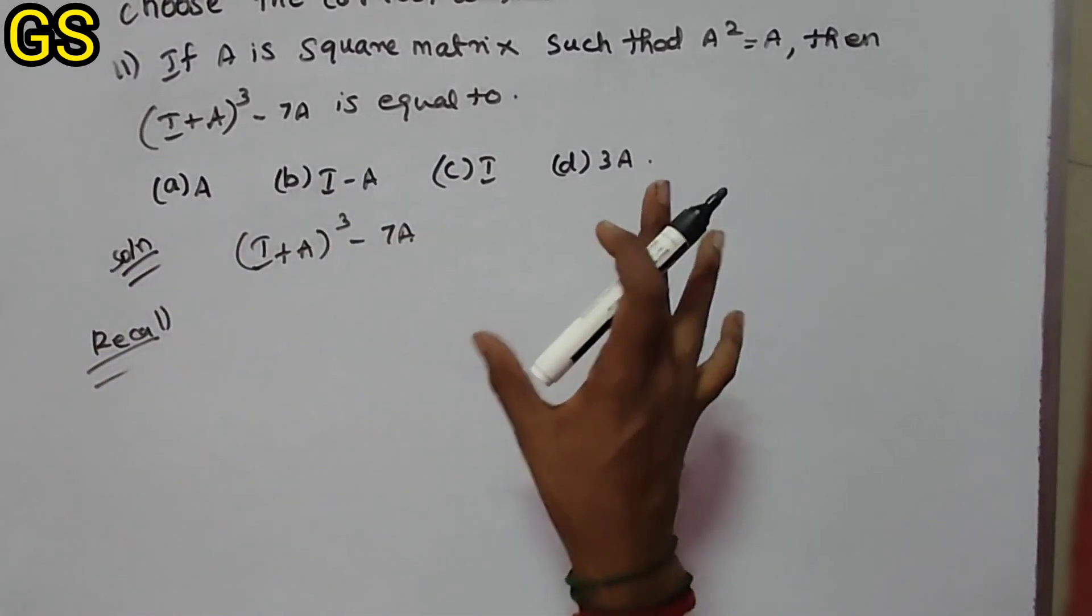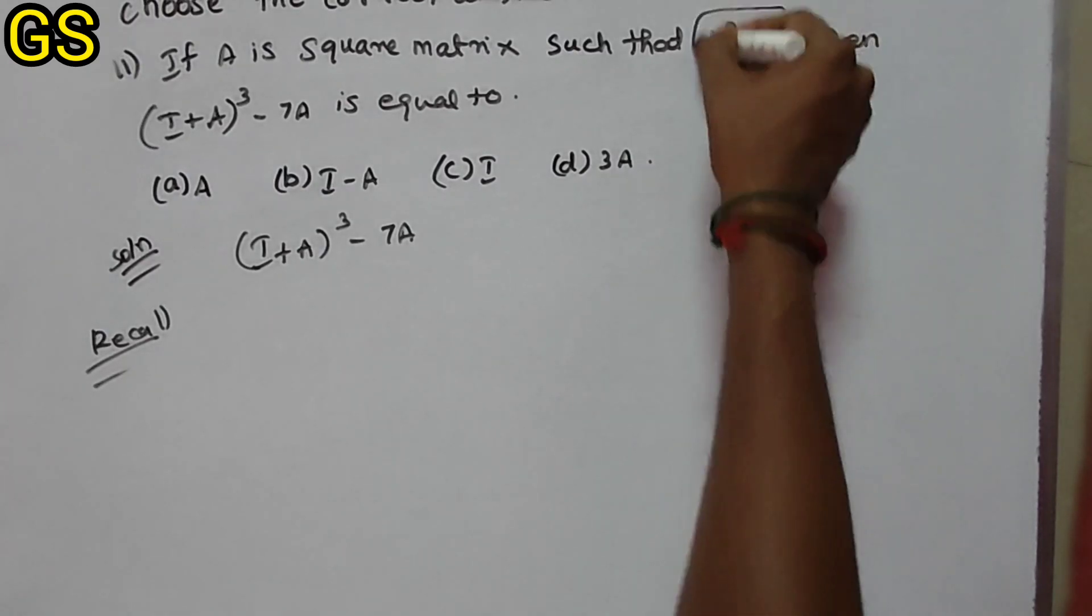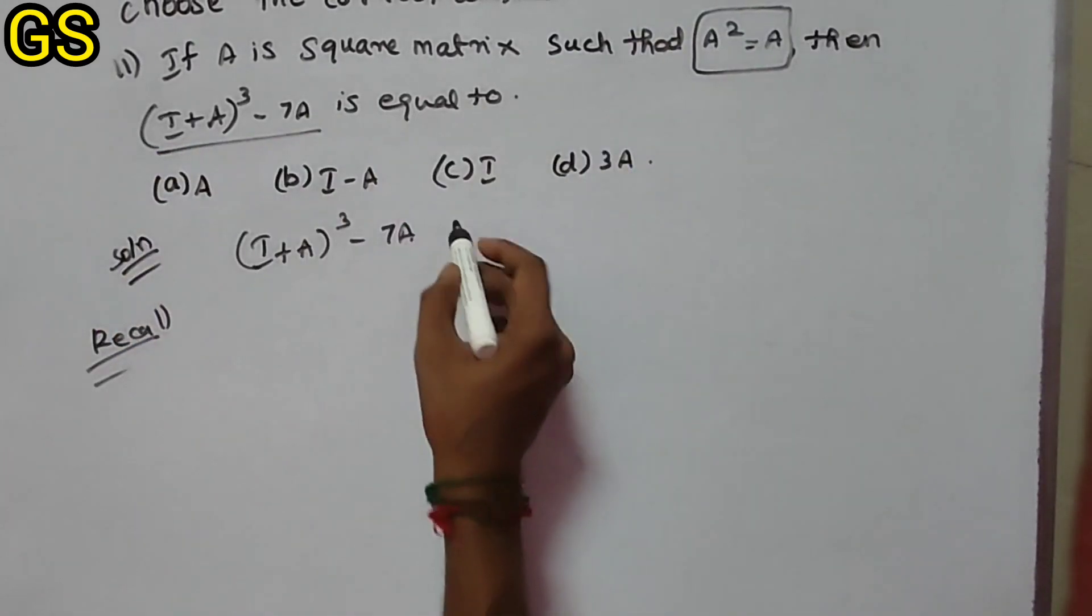If A is a square matrix such that A² = A, then (I+A)³ - 7A is equal to what?